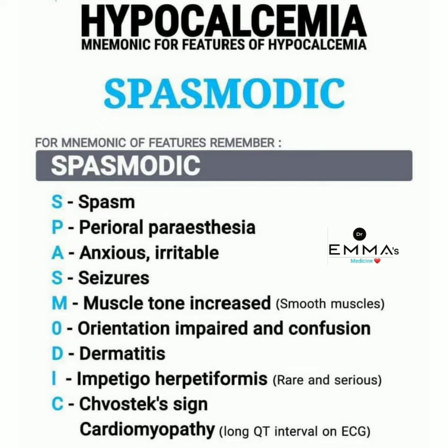S for spasm, P for perioral paresthesia, A for anxious and irritable, S for scissors, M for muscle tone increased — specifically smooth muscle. O for orientation impaired and confusion, D for dermatitis, I for impetigo herpetiformis — a rare and serious condition.